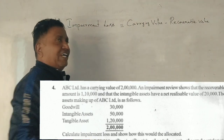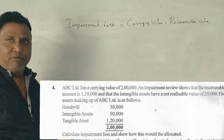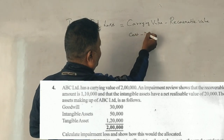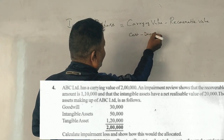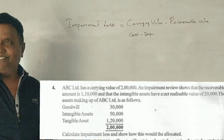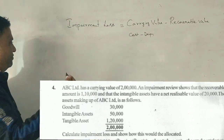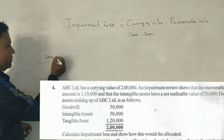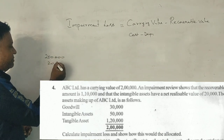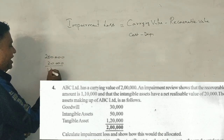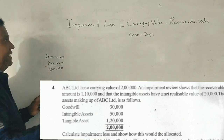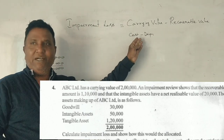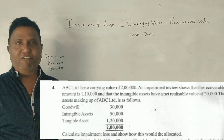What is this carrying value? Carrying value is nothing but the cost of the asset minus depreciation. For example, if an asset is purchased for 2 lakh rupees and 20,000 depreciation is charged on it, the remaining 1 lakh 80,000 will be the carrying value of the asset.